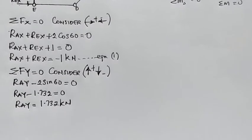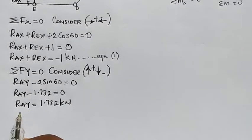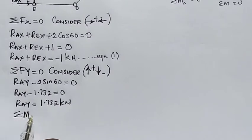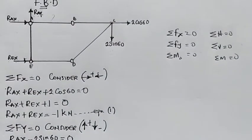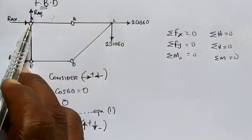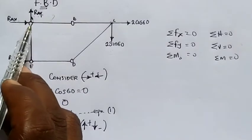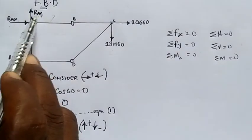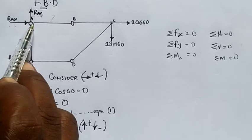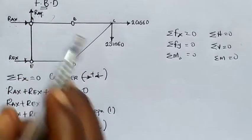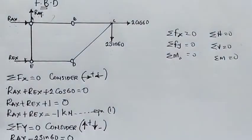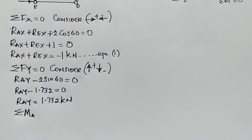Next, we calculate moments. We take moments about point A, which is the hinge support. Taking moments about the hinge is advantageous because at that point we have two unknowns - when we take moments there, those unknowns become zero, allowing us to focus on the other forces.